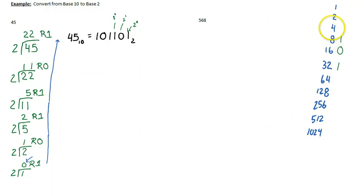And so now I'm at 40. 40 plus 4 is 44, which is still less than 45. That's good. So I'm going to flick that on. 44 plus 2 is going to give me 46, which is bigger than 45. So I can't use that. I'm going to flick that off. And then 44 plus 1 is 45. So I have to flick that on.